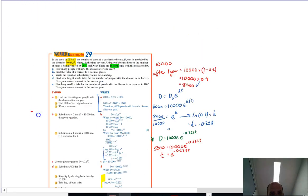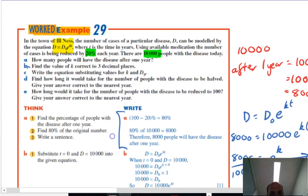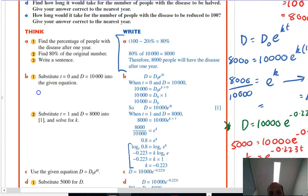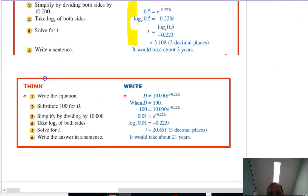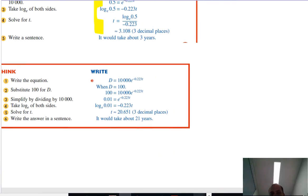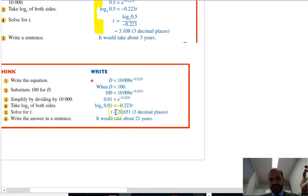Okay, last bit of this question. How long would it take for the number of people with a disease to be reduced to 100? Give your answer correct to the nearest year. Well, I think that's the same question. I don't think there's anything interesting in that. Apart from the fact, apart from the fact that once you've got your answer, 20.651, you're going to have to round up. You kind of can't do like a half a year.